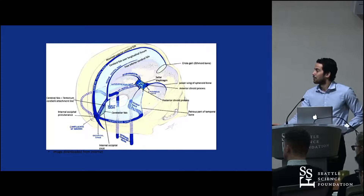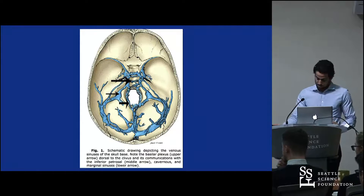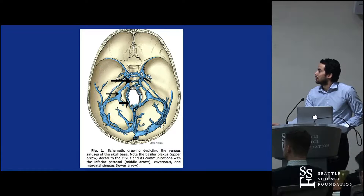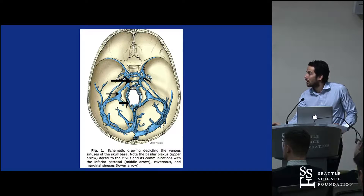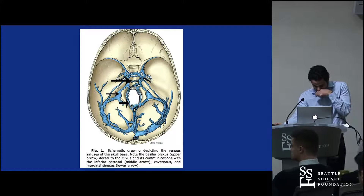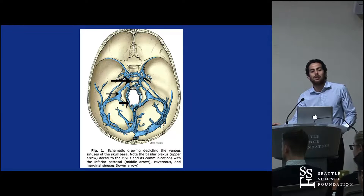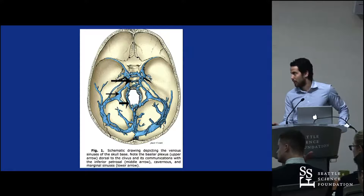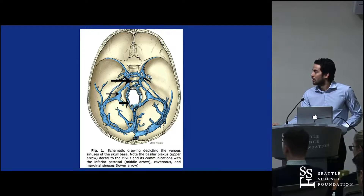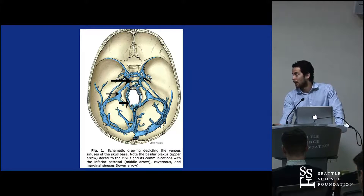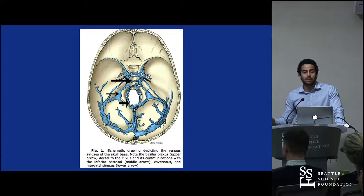The other two sinuses visible on this image are the inferior petrosal sinus, which runs right along the petrous ridge of the petrous bone and receives most of the drainage from the basilar plexus, and the superior petrosal sinus, which runs over the anterior aspect of the petrous bone, receives most of the drainage from the cavernous sinus, and drains directly into the sigmoid sinus.